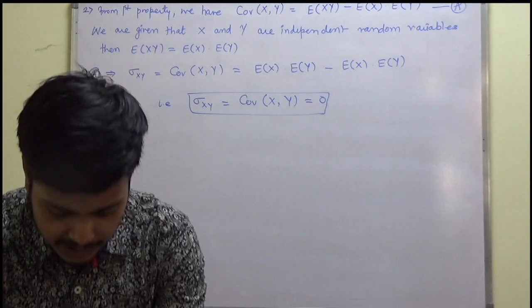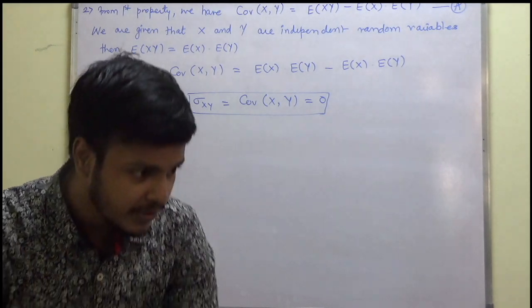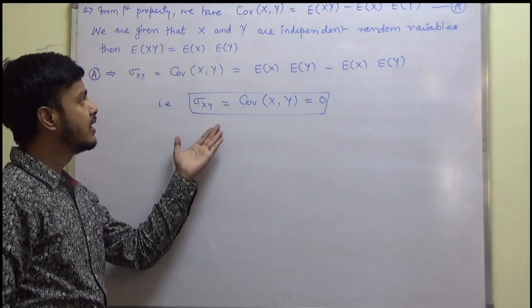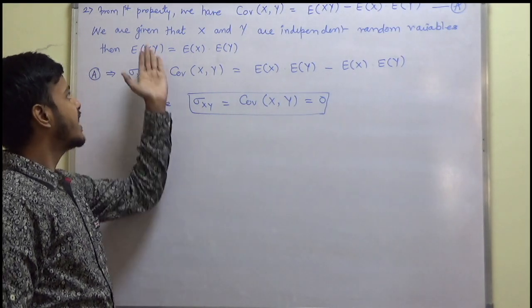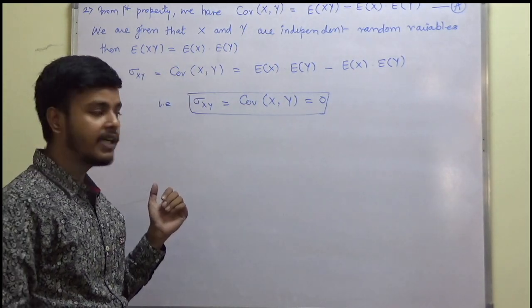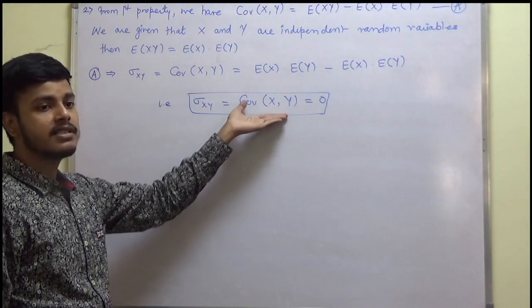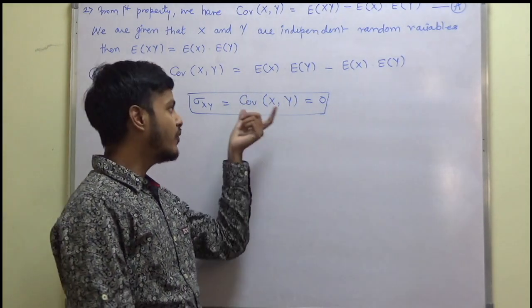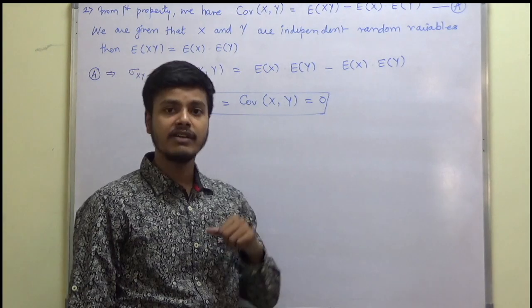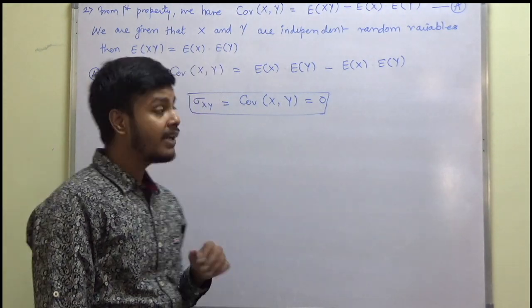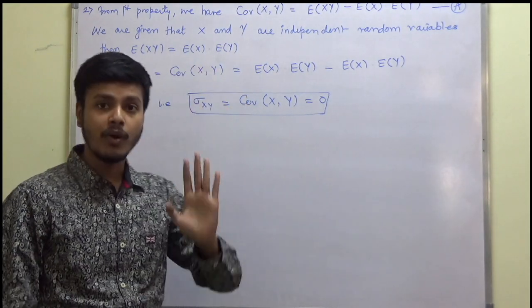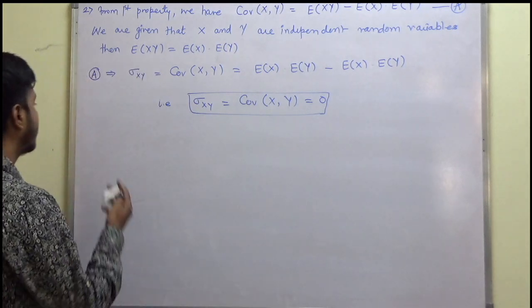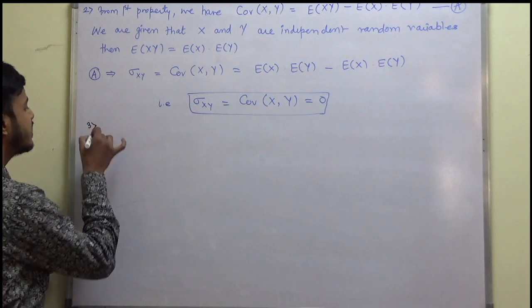Before we take the third property, let me make a remark. If x and y are independent random variables, covariance of x and y is zero. But if the covariance of x and y is zero, then x and y may not necessarily be independent. So the converse may not be true.